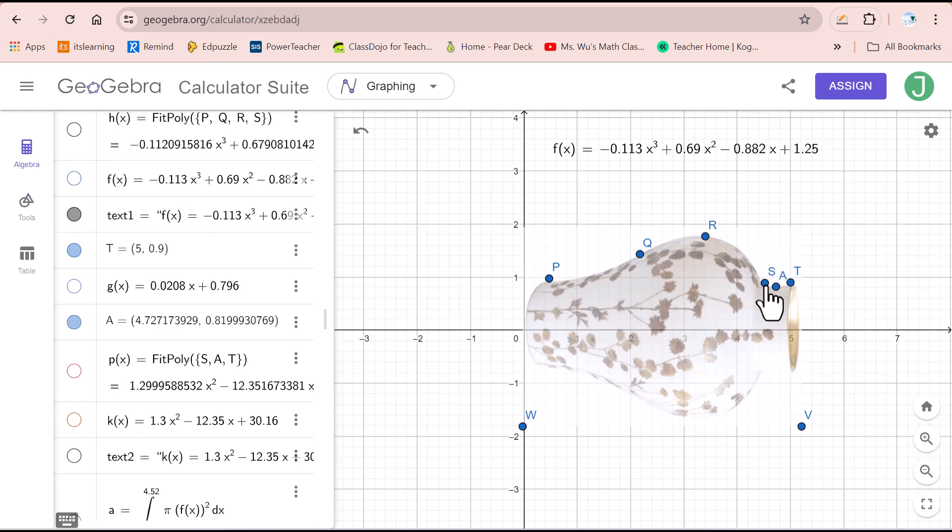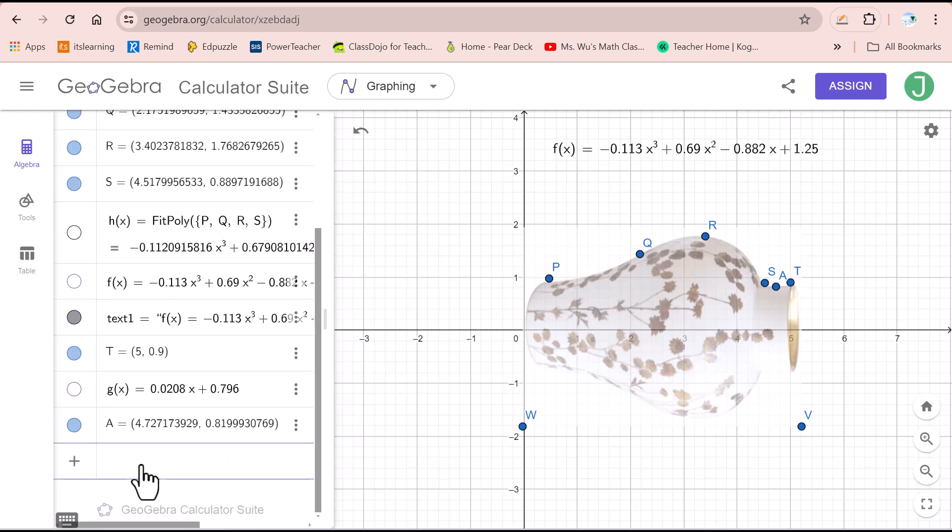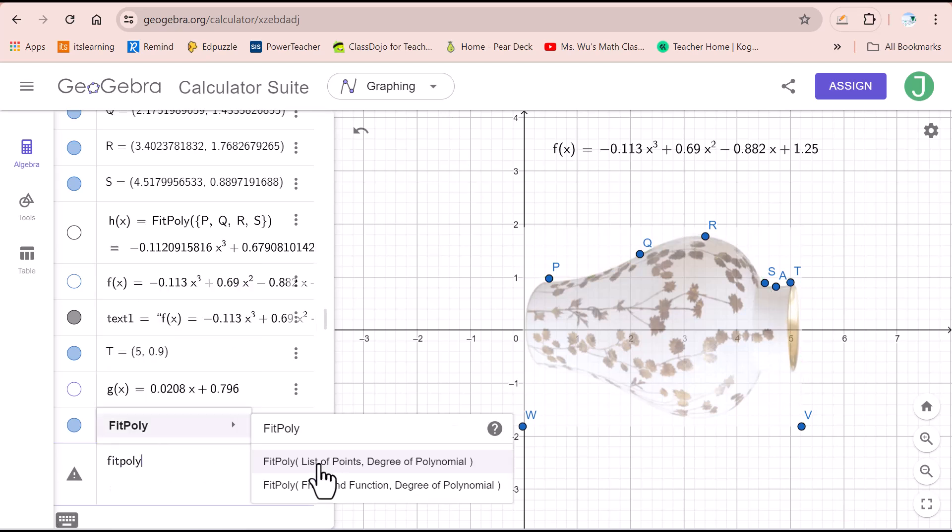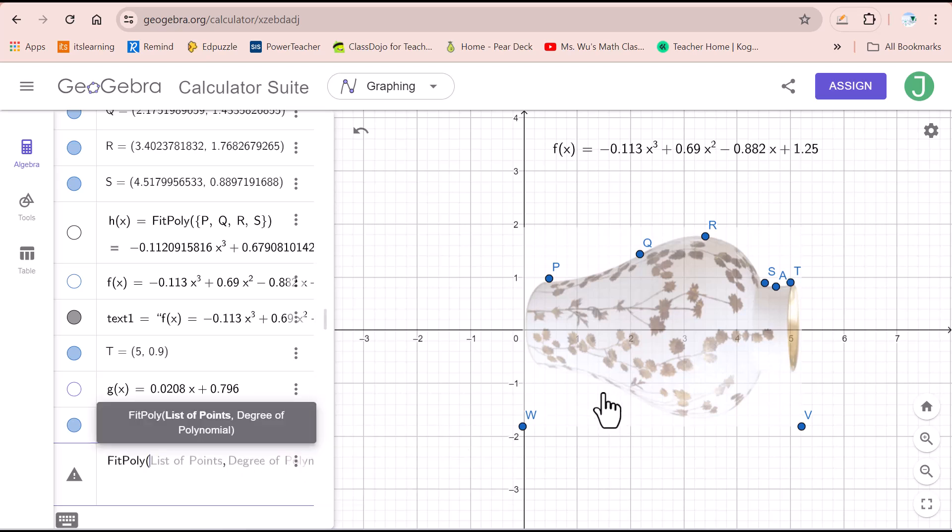I added point A between point S and point T. Then I use the fit poly, list of points degree of polynomial, to find a quadratic function to model the curve from S to T.